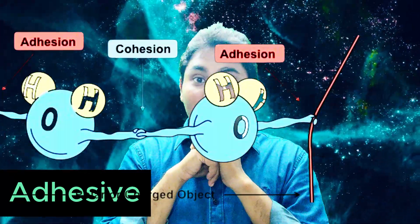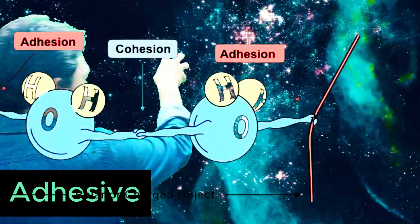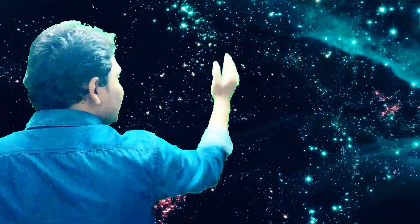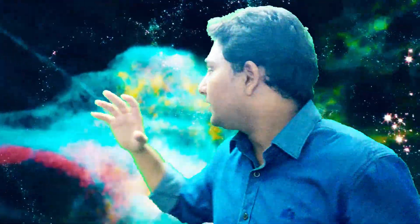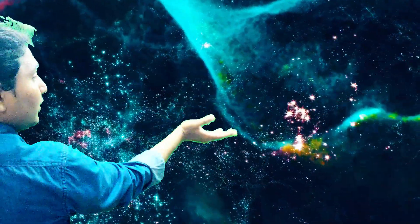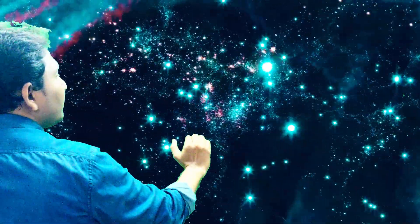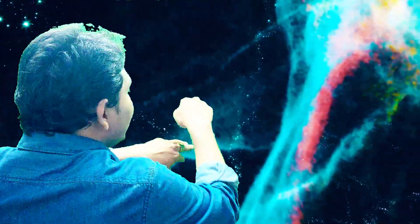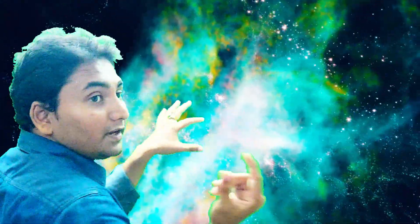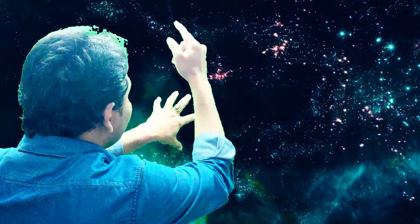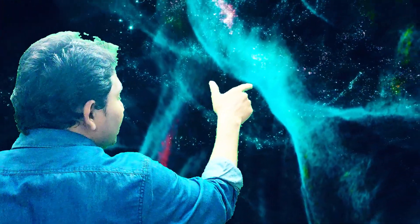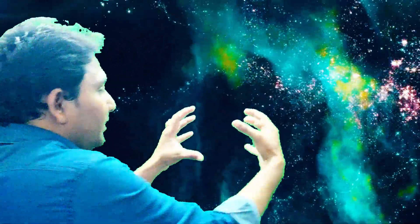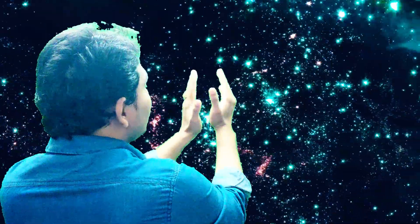Adhesive forces are the attraction between a water molecule and the wall. We can understand this in the context of transpiration — water travels up a plant as a column. Cohesive forces make it possible for water to travel up as a column because water molecules attract one another.